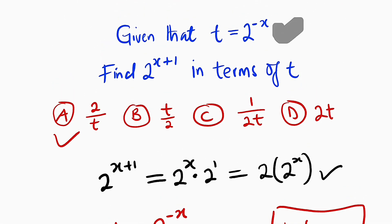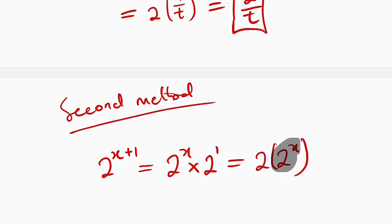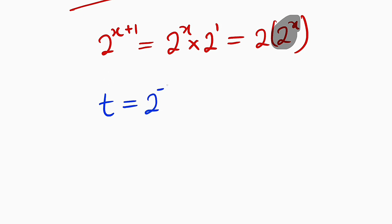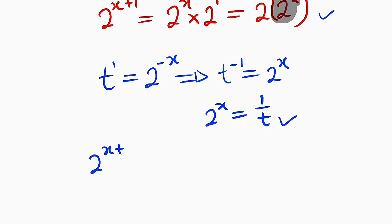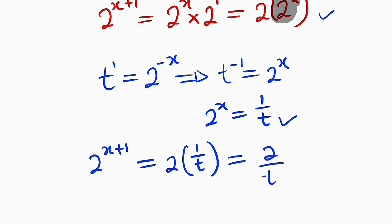Our main equation, remember, is t equal to 2 raised to the power of negative x. Note that t has a power of 1 naturally. So if we want to get rid of this negative sign, we can multiply both powers by negative 1. This implies that t raised to the power of negative 1 is equal to 2 raised to the power of x. And t raised to the power of negative 1 is the same thing as 1 divided by t. Therefore, 2 raised to the power of x is equal to 1 divided by t. Substituting directly, 2 raised to the power of x plus 1 is equal to 2 multiplied by 1 divided by t, which gives 2 divided by t as our final answer.